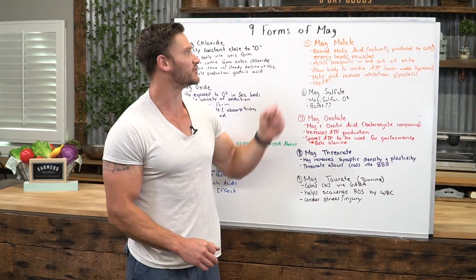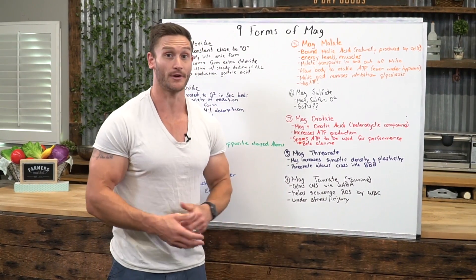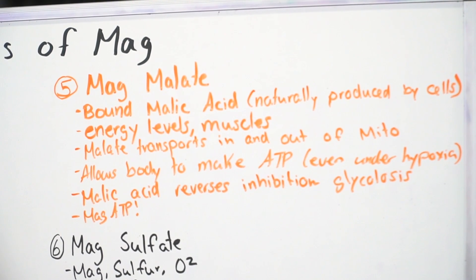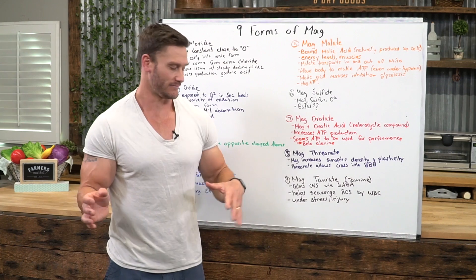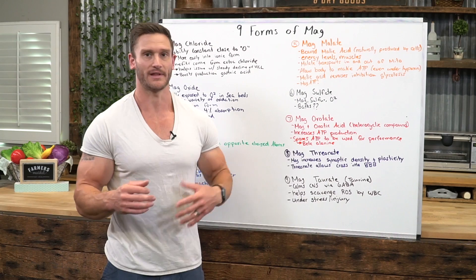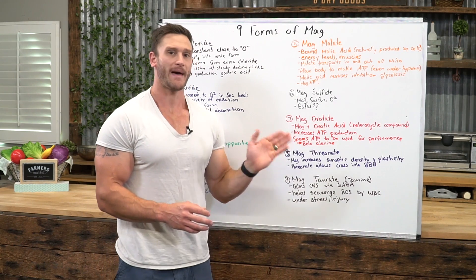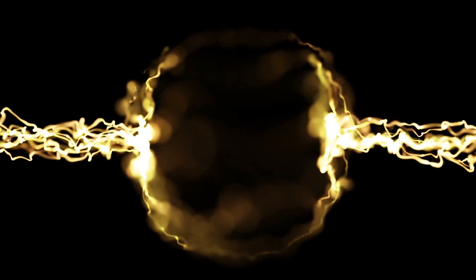Now we go over to mag malate — most people probably call it malate. Mag malate is bound to malic acid, which is naturally produced by our cells; it's not some weird extra chemical they're combining it with. The reason that mag malate is so great is it's specifically good for our energy levels and for our muscles.